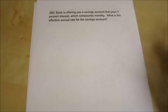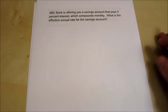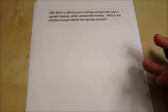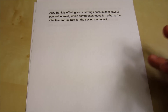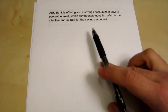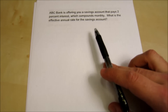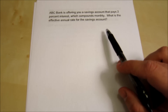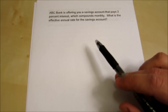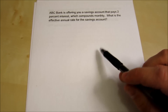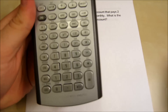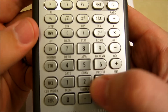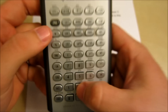This is the first example we'll go over. If you see a question like this on the exam, be super excited because it's going to be relatively easy. The question reads: ABC Bank is offering a savings account that pays 2% interest which compounds monthly. What is the effective annual rate for the savings account? We're going to hop into the ICONV function.